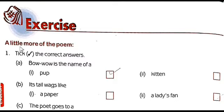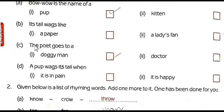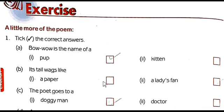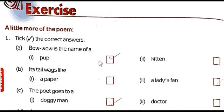Exercise A covers more of the poem. Students, get ready with a pencil to write the answers in the textbook. In the first section, tick the correct answers. There are four multiple choice questions. You have to read the question, then tick the right answer. The first one: 'Bow-wow is the name of a...'